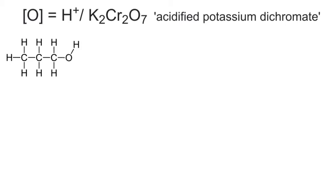I'm going to react this with acidified potassium dichromate, and I'm going to keep that formula and the reference to [O] in square brackets at the top of the screen all the way through, because it's crucial to realise it is acidified potassium dichromate. The slash isn't an 'or' or an 'instead of' — it's part of the formula — but in the equation we're only going to write [O] in square brackets to represent it.